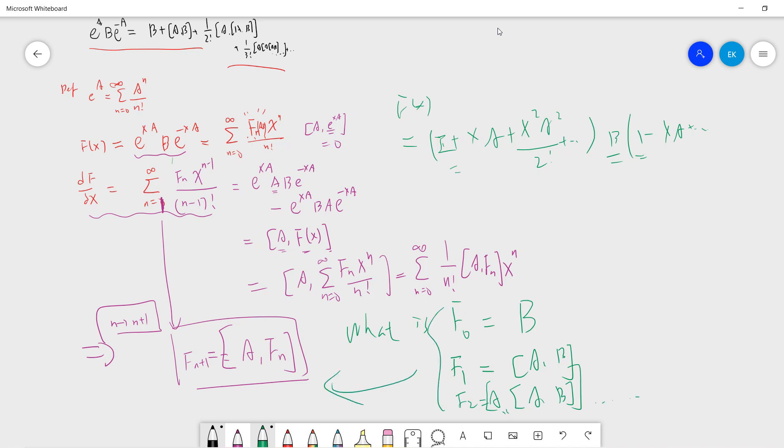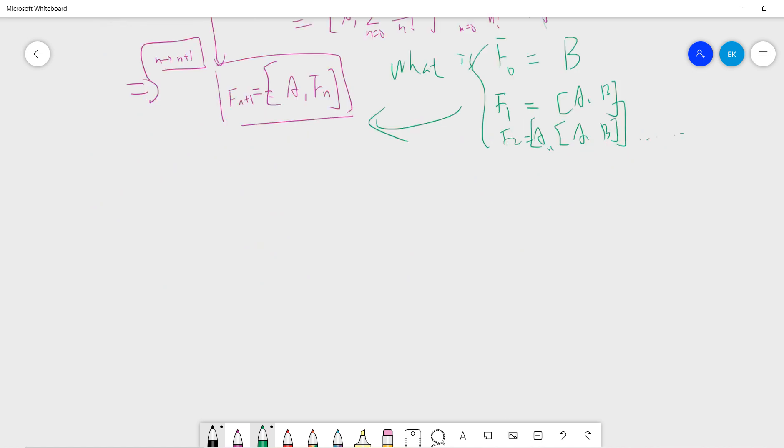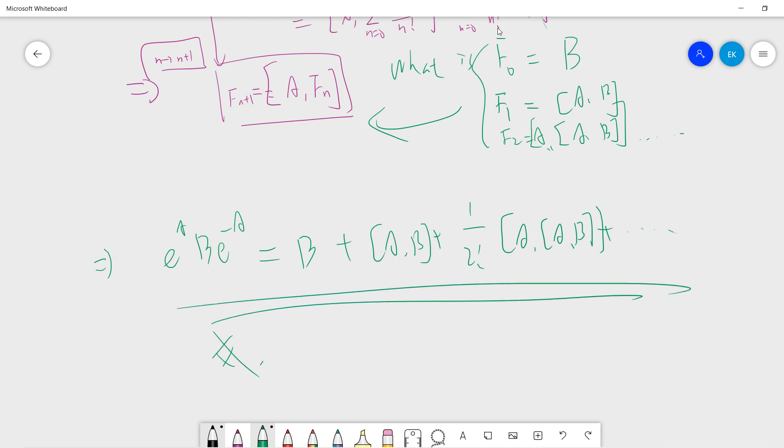You put all these f_n into the formula, and then let x equal one. Then finally, since you already know each f_n, you put x equals one. What we have proved is that e^A·B·e^(-A) equals B plus [A,B] plus 1/(2!)·[A,[A,B]], and you keep going. Proof is done. This proof is basically very trivial, just a recomputation.